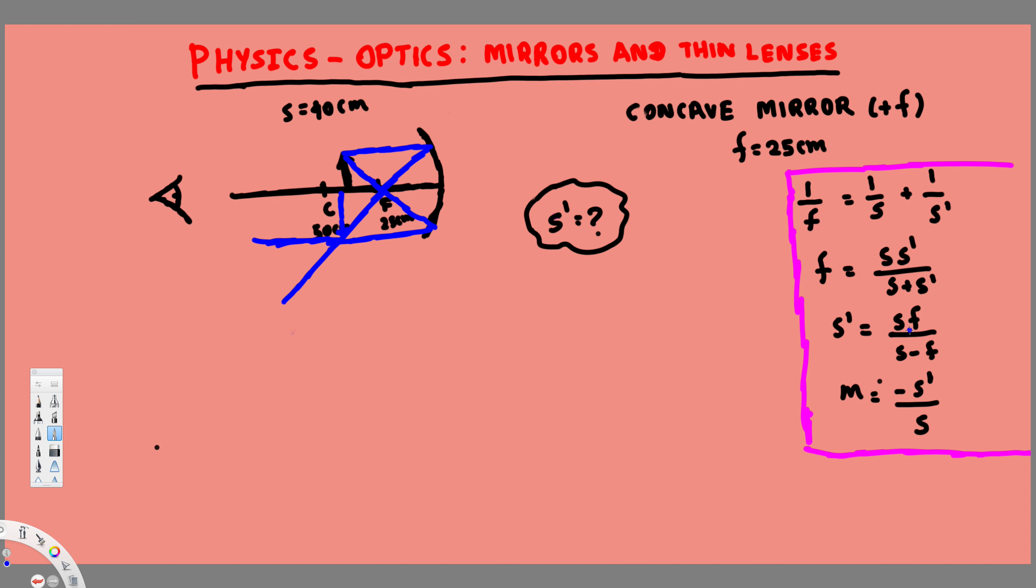To find this, we can use this equation: s prime equals s f over s minus f. Here, s prime is the image distance that's what we're trying to find, s is the object distance that's given, 40 centimeters, and f is the focal length, 25 centimeters.